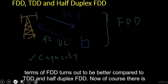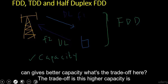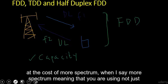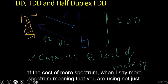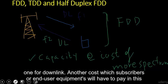Of course there is always a trade-off. If FDD gives better capacity, what is the trade-off? The trade-off is that this higher capacity comes at the cost of more spectrum. You are not using just one unpaired spectrum — in fact you are using two different spectrums, one for uplink and one for downlink.